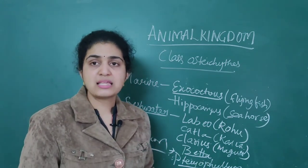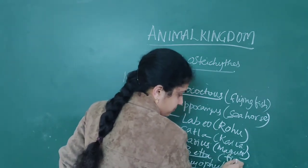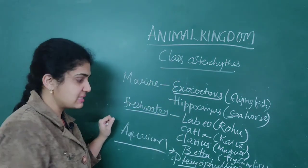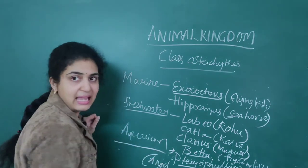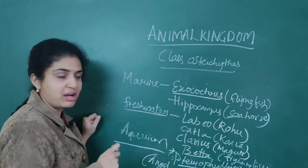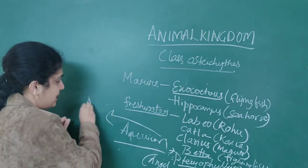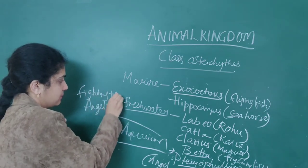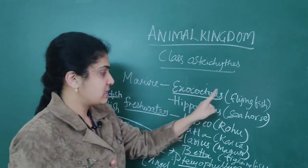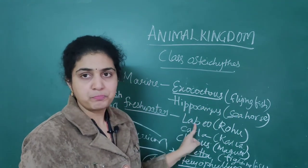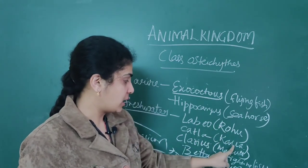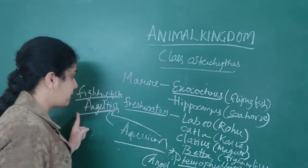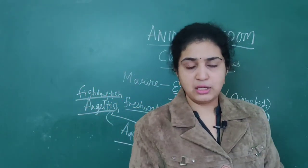For aquarium organisms: Betta is called fighting fish, and Pterophyllum is called angelfish. So the common names to remember are: Exocoetus — flying fish; Hippocampus — seahorse; Labeo — Rohu; Catla — Catla; Clarias — Magar; Betta — fighting fish; Pterophyllum — angelfish.